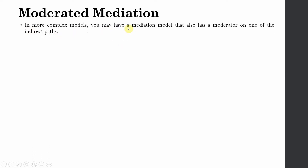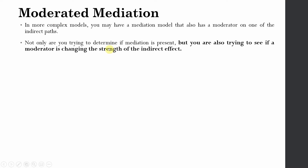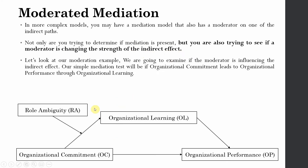In more complex models you may have a mediation model that also has a moderator on one of the indirect paths. Not only are you trying to determine if mediation is present, but you are also trying to see if a moderator is changing the strength of the indirect effect — at higher or lower levels of the moderator. In this example, our IV is organizational commitment, our mediator is organizational learning, and our DV is organizational performance, with role ambiguity as the moderator.